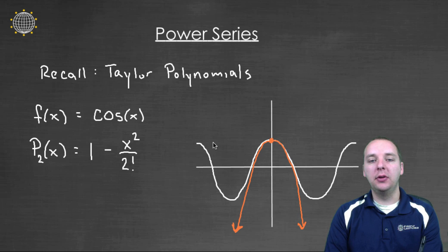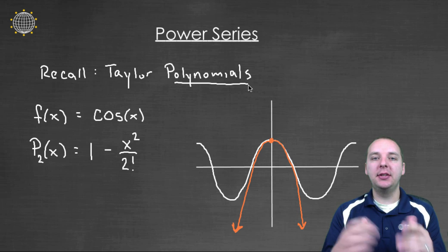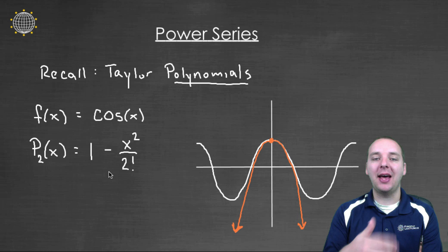But once you leave 0, like if you look out here, the approximation is not good anymore. But we realize that for these Taylor polynomials, if you increase the degree of your polynomial, if you tack on more terms, then the approximation becomes more accurate for longer.